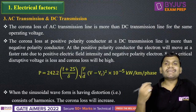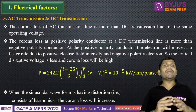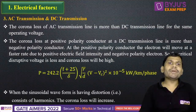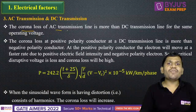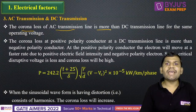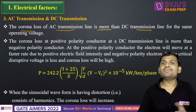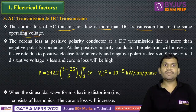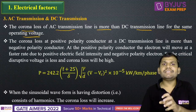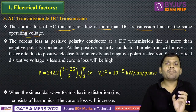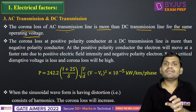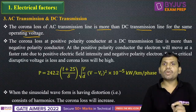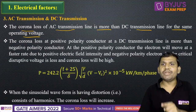One more electrical factor is how it depends on AC and DC. The corona loss of an AC transmission line is more than a DC transmission line for the same operating voltages. If you apply AC to the transmission lines, the corona loss is more as compared to DC transmission.